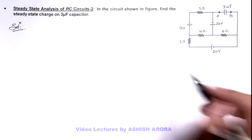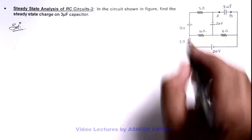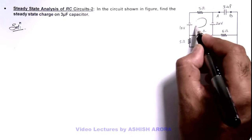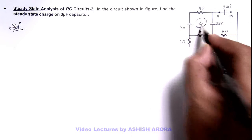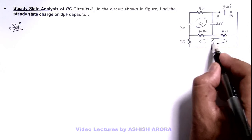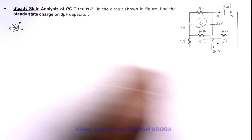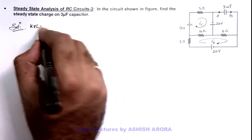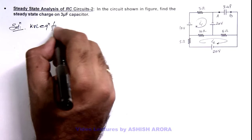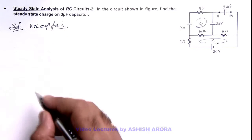To apply KVL in this circuit, we first distribute the current. Say here current flows I1, and in this loop current flows I2. So if we write the KVL equation for current I1: